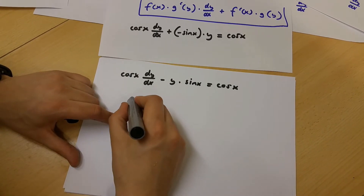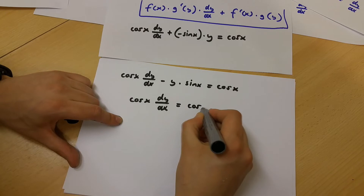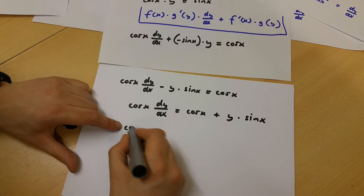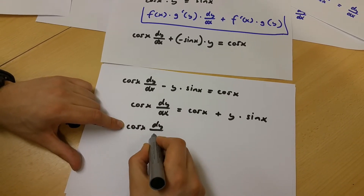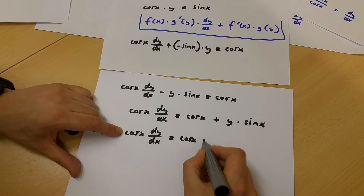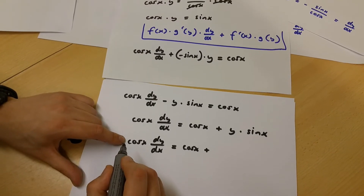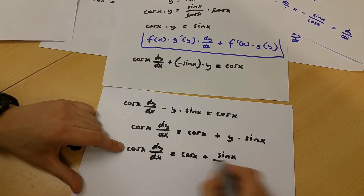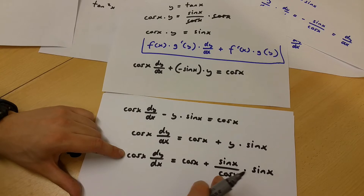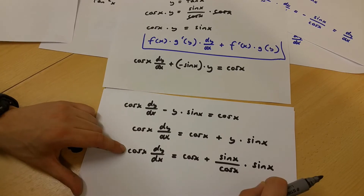So we can say that cos x dy/dx is equal to cos x plus y times sin x. Let's write down cos x multiplied by dy/dx equals cos x plus y times sin x. Now, y is actually sin x over cos x, so y times sin x is the same as sin x over cos x multiplied by sin x.